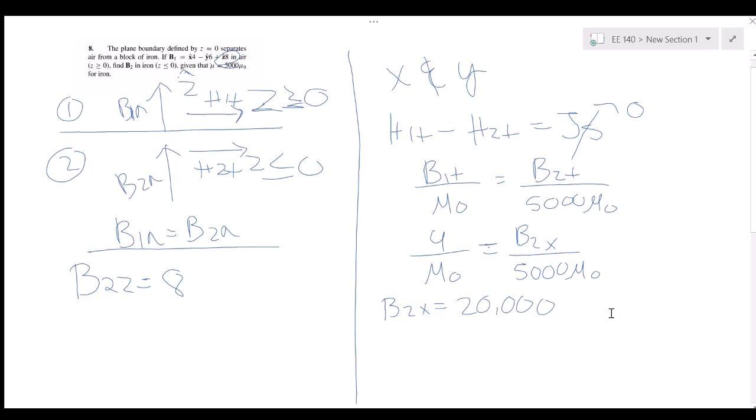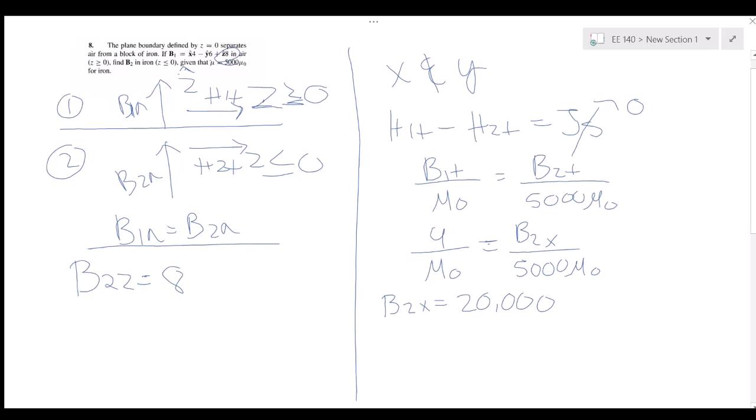Now if we do this for y, y would be just negative 6 over mu naught, is equal to b2y over 5000 mu naught. Cross multiply and b2y would equal negative 30,000.